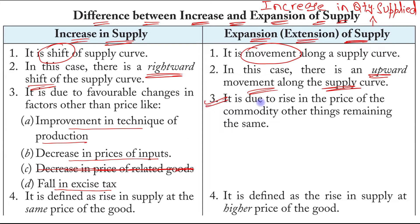In the case of expansion of supply, it is due to a rise in the price of the commodity, other things remaining constant. So the main factor responsible for expansion is the price of the good itself. If there is a rise in the price of the good, the quantity supplied will increase.